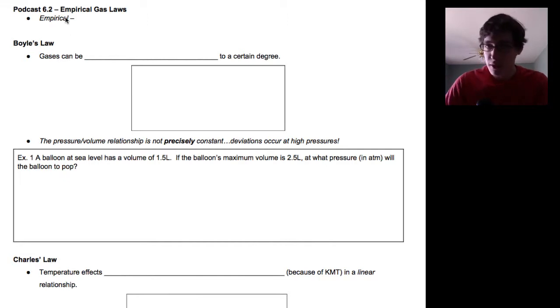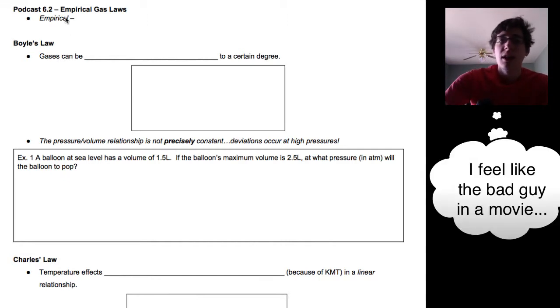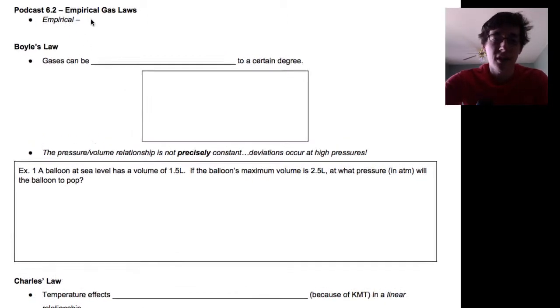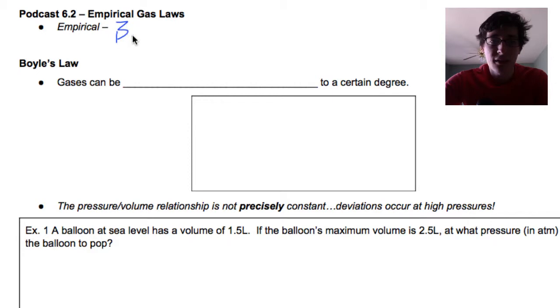I just realized how dark my face was, so I apologize for that. So we're going to start with what the word empirical means. This is observable, based on data. Again, we can't see individual gases, but we can collect data and build these relationships up.